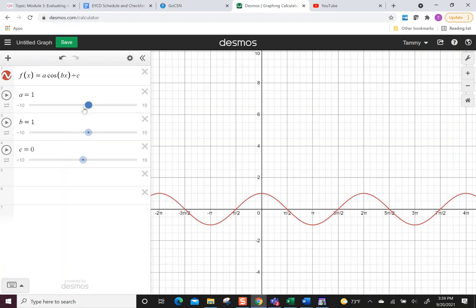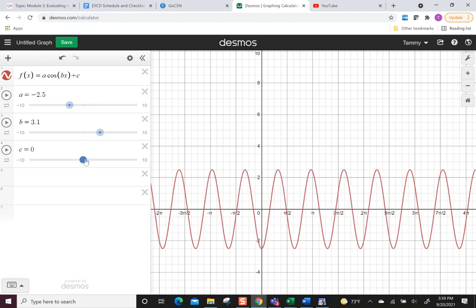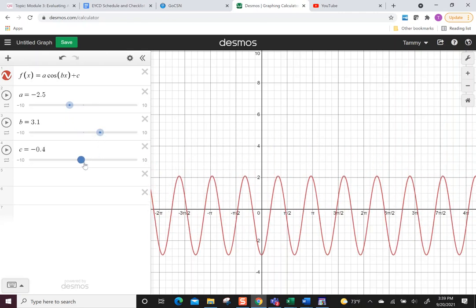So again, then I can see what happens with the amplitude. I can see what happens with the period, and then I could stretch it or shrink it. So those are the basic ones, sine and cosine.